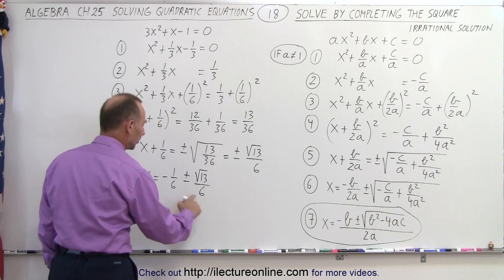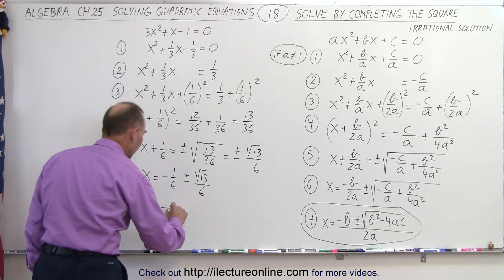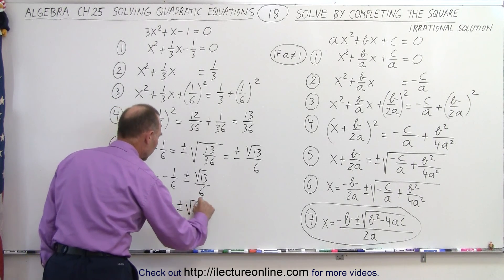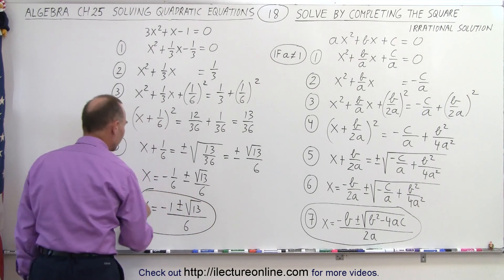And notice I have 6 in both denominators. So I can write that x is equal to minus 1 plus or minus the square root of 13 all divided by 6. And there you go. That's how we can leave it.